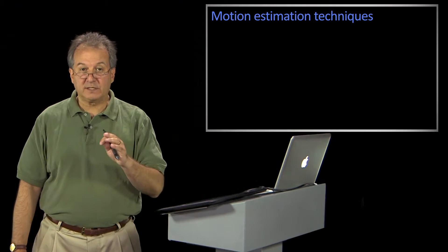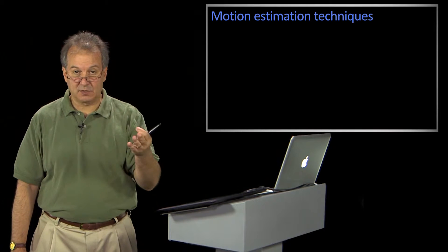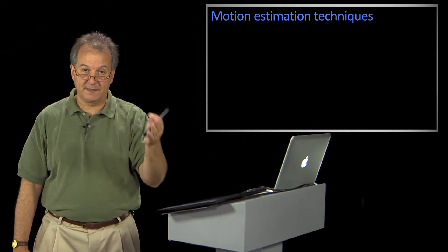All right, welcome back to Computer Vision. Last time we introduced the notion of image motion. We said how motion is actually a construct of your head, because there's just a bunch of static frames and your brain induces this notion of believing that there's actual motion. So the question then becomes, how do we compute that motion? And we talked about motion estimation techniques are going to be the methods of doing this.